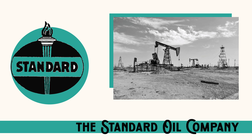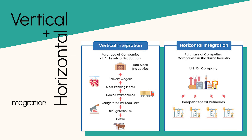One of Rockefeller's most significant contributions was his role in the development of the oil industry. Since he founded Standard Oil, he was able to develop vertical and horizontal integration. Through vertical integration, he gained control over all aspects of oil production, from drilling to refining and distribution. Through horizontal integration, he merged with other companies, increasing his market share and influence. By consolidating the oil industry, Rockefeller was able to lower costs and increase efficiency, offering oil at lower prices than his competitors.